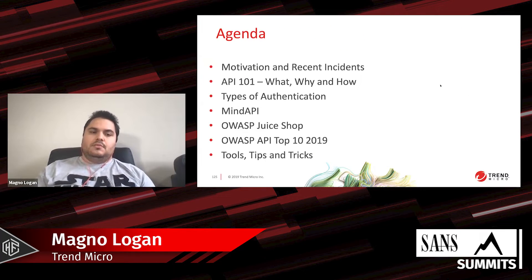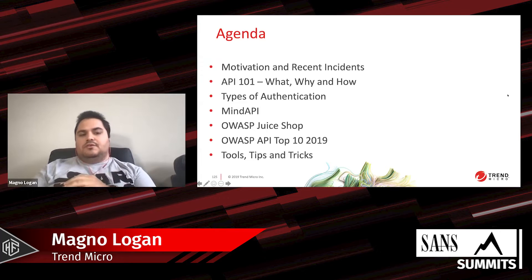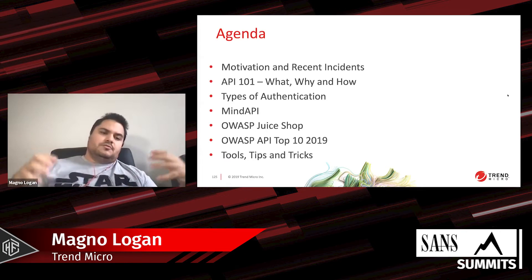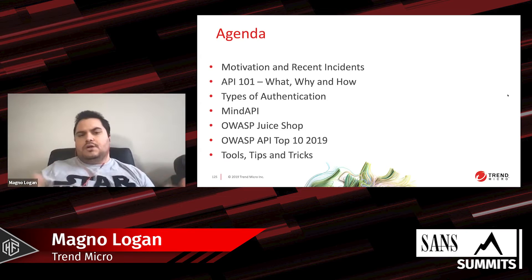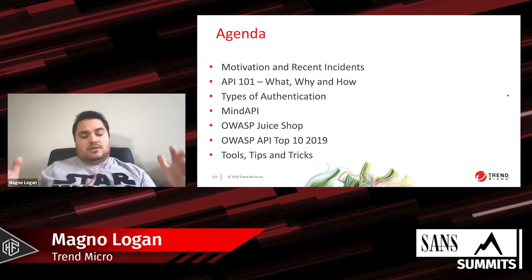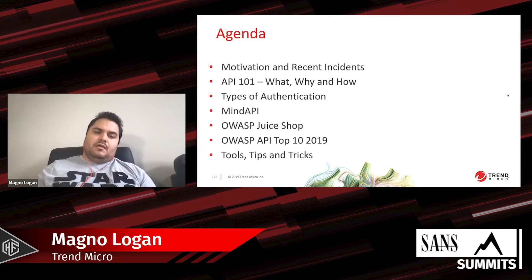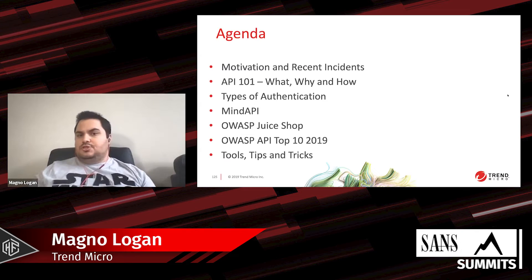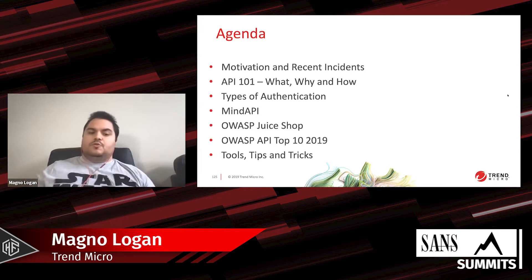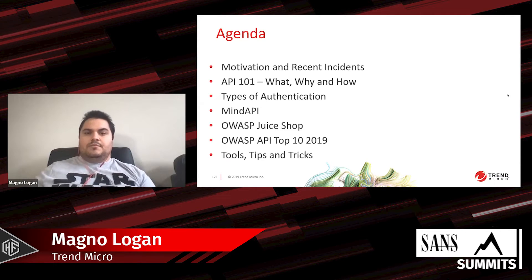The agenda for today covers motivation and some recent incidents around API security, the API 101 — how APIs are created and why — and different types of authentication. We'll cover open source projects and guidelines like the Mind API checklist, the OWASP Juice Shop, and the OWASP Top 10 for APIs which was released in 2019. Then I'll cover some tools, practical references, and tricks.